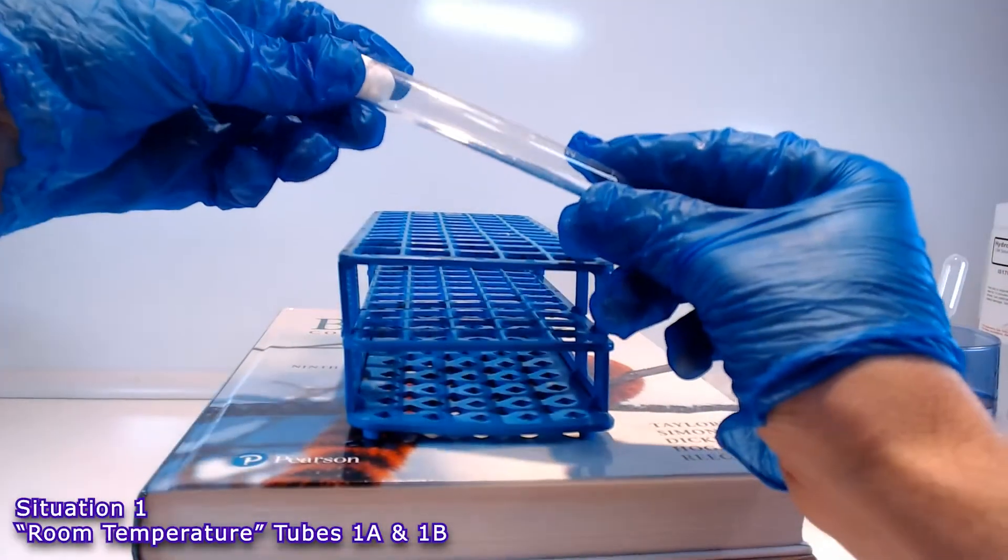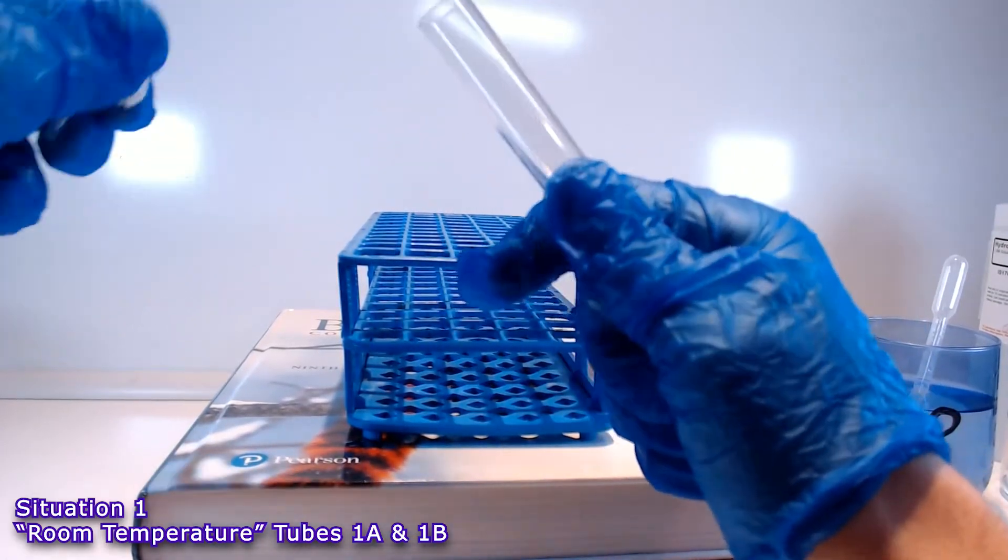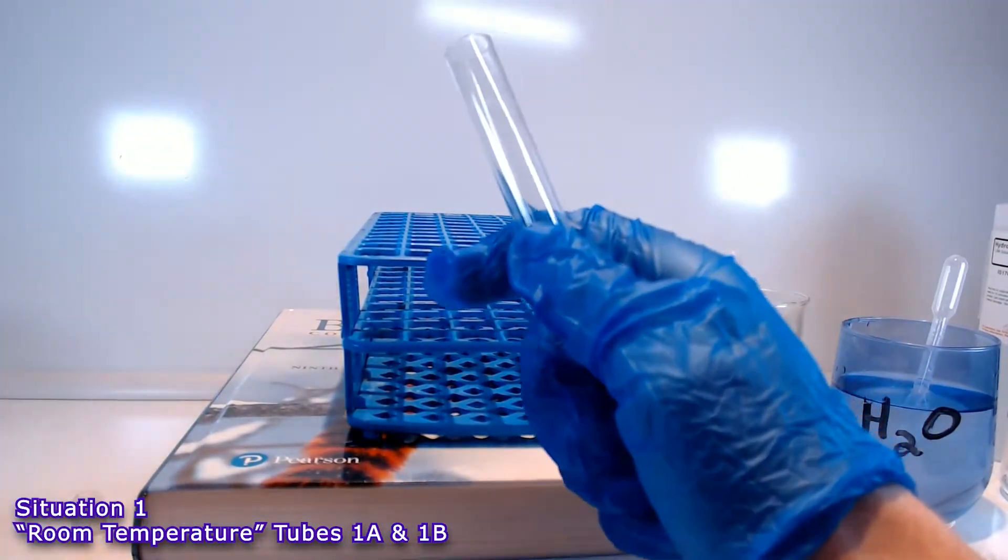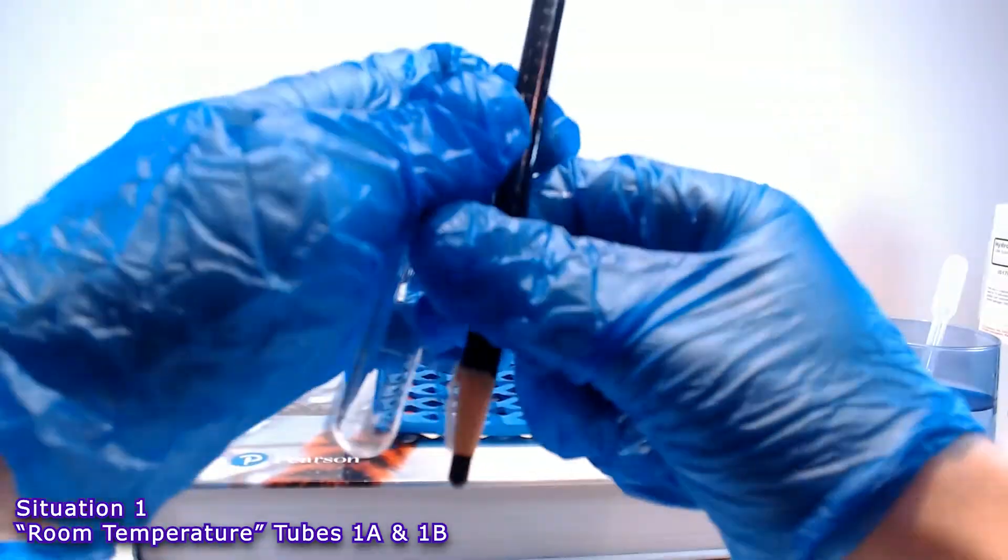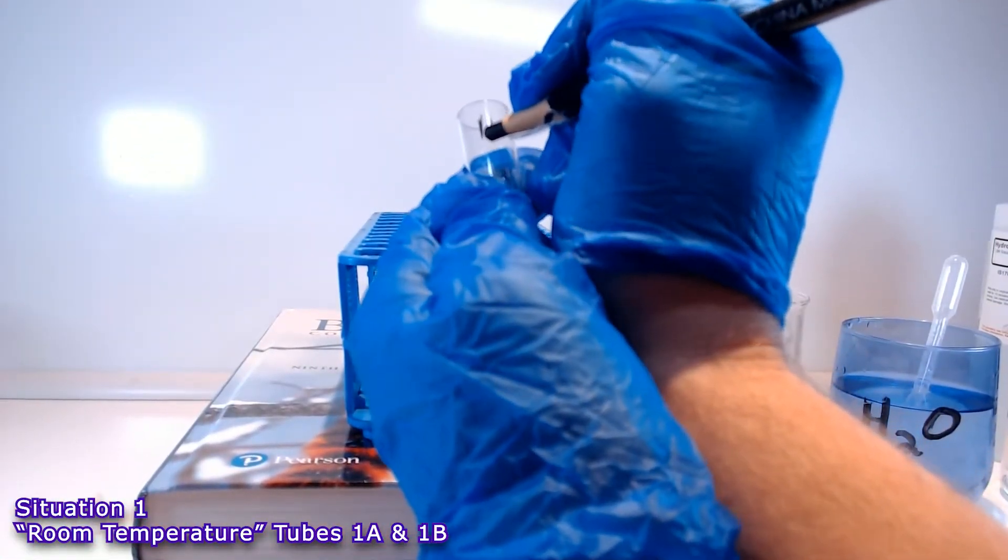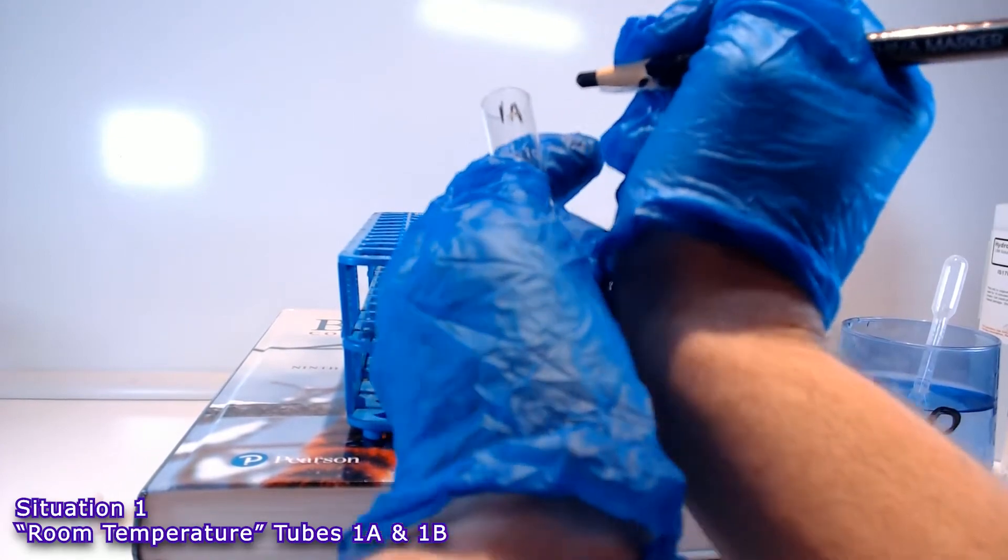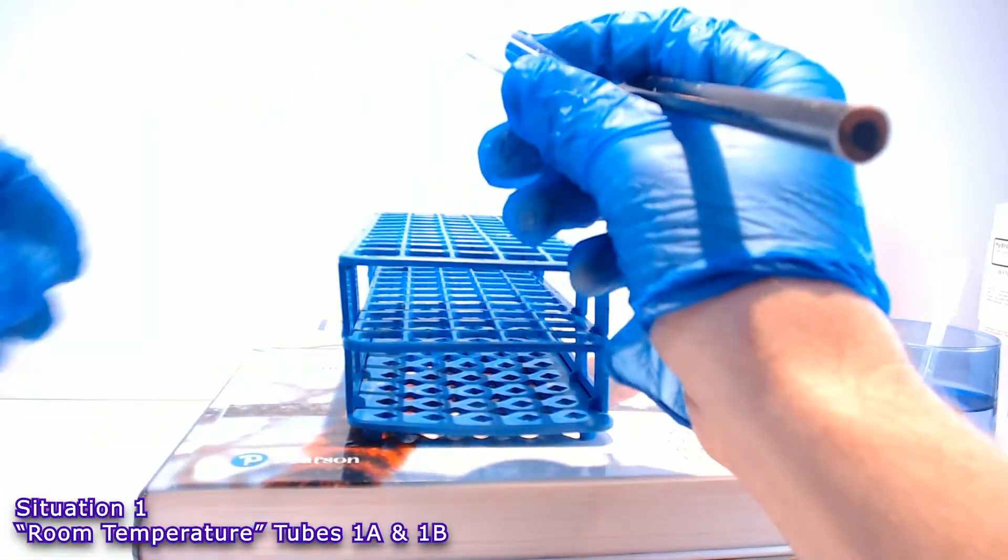In the instructions for situation one, it tells us to take a test tube and make a mark one centimeter from the bottom, then make a second mark two centimeters from the bottom. We're going to do this with a second tube, and we're going to label them tubes 1A and 1B.